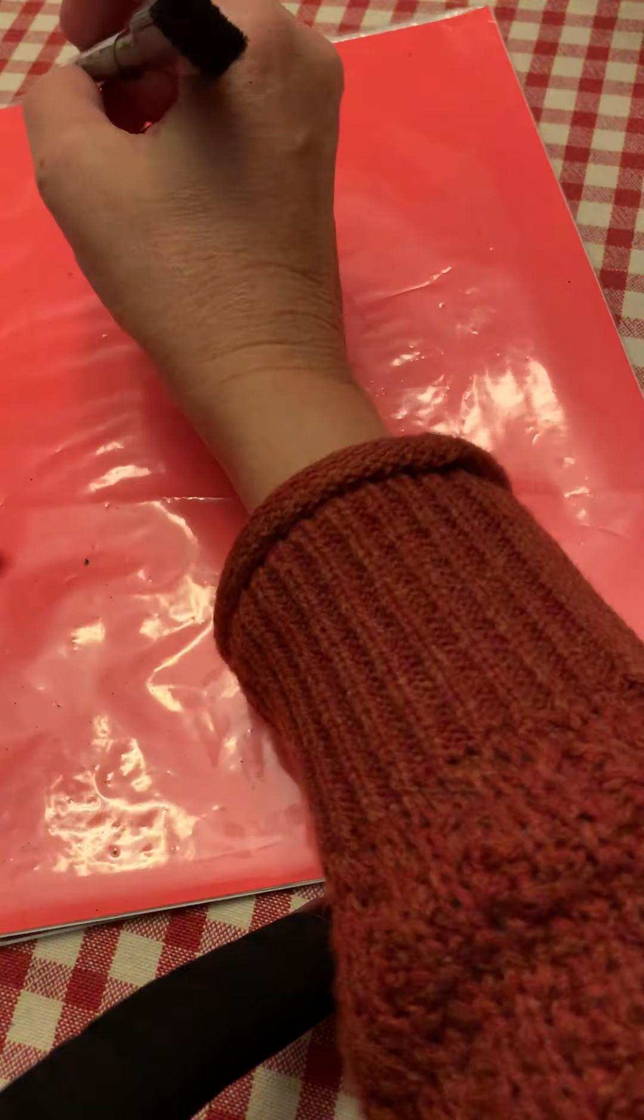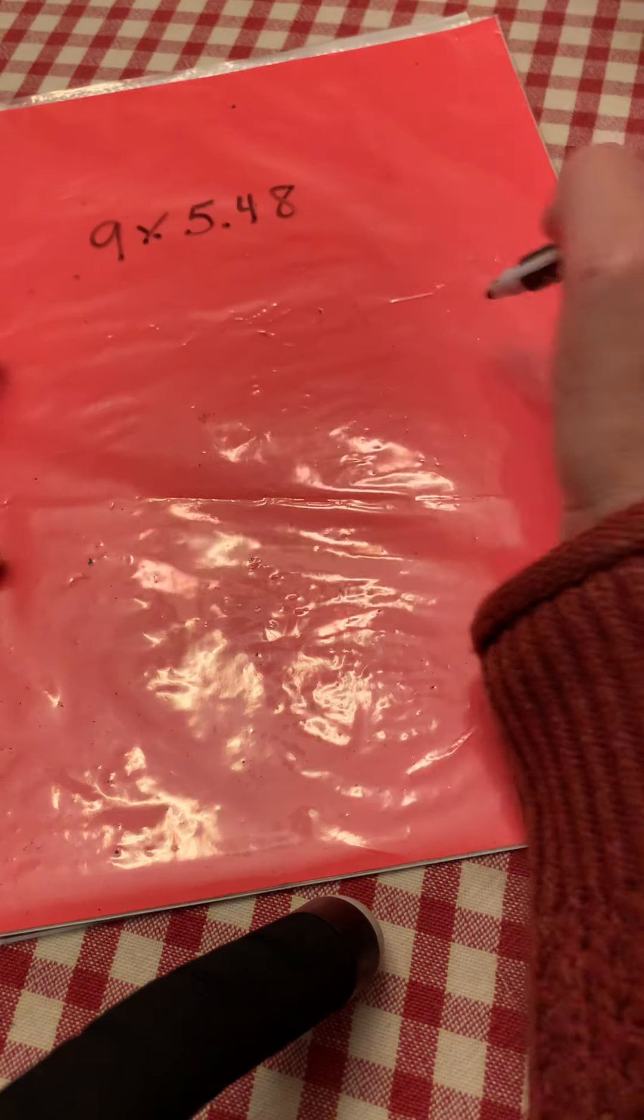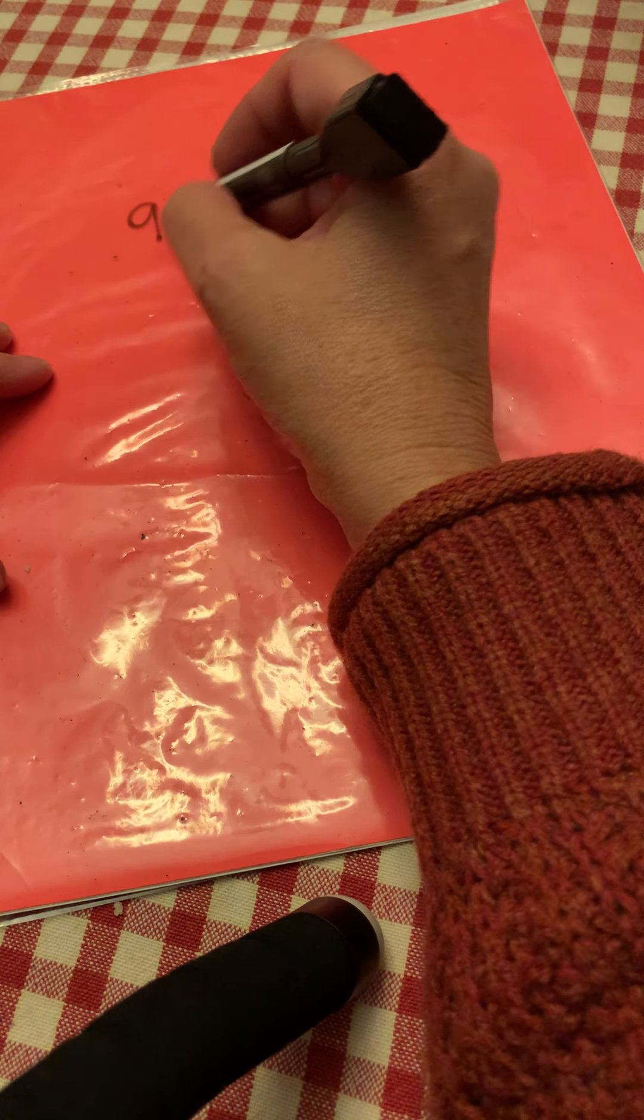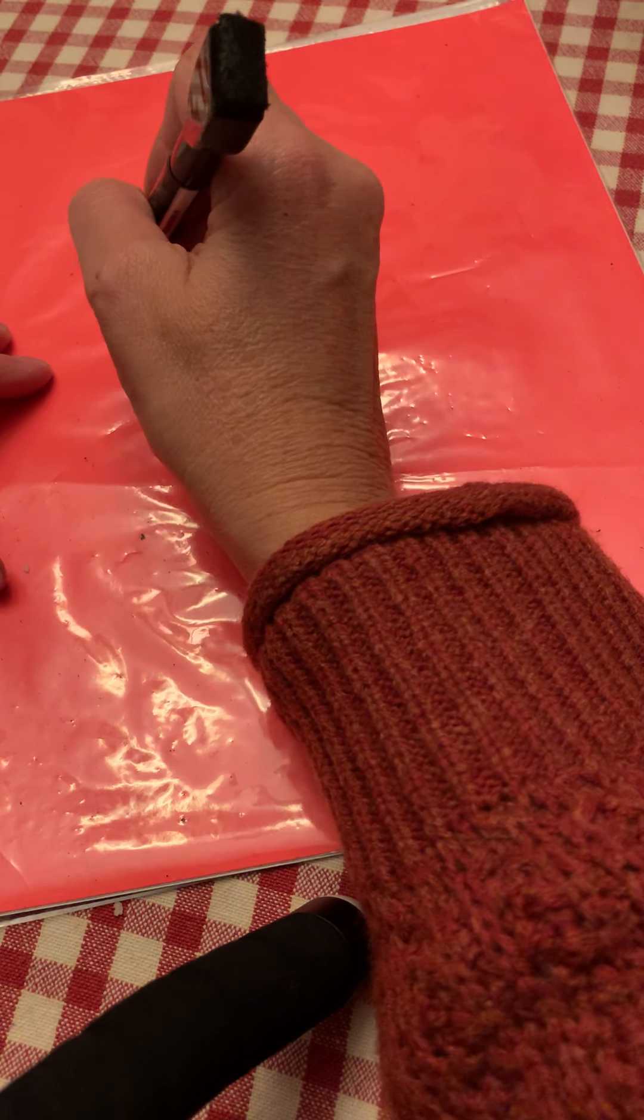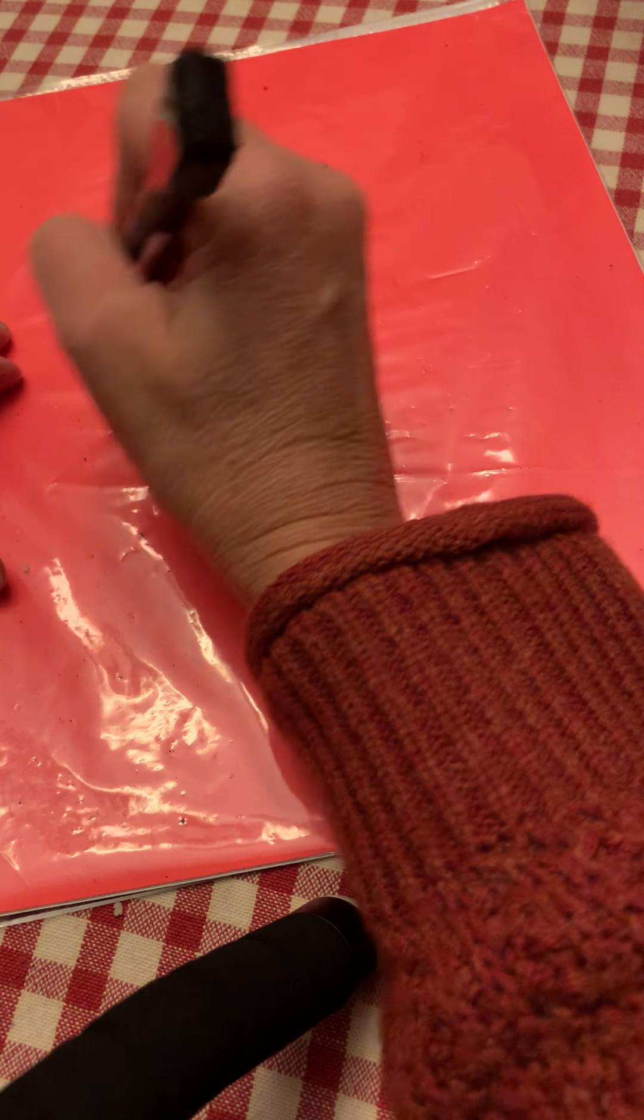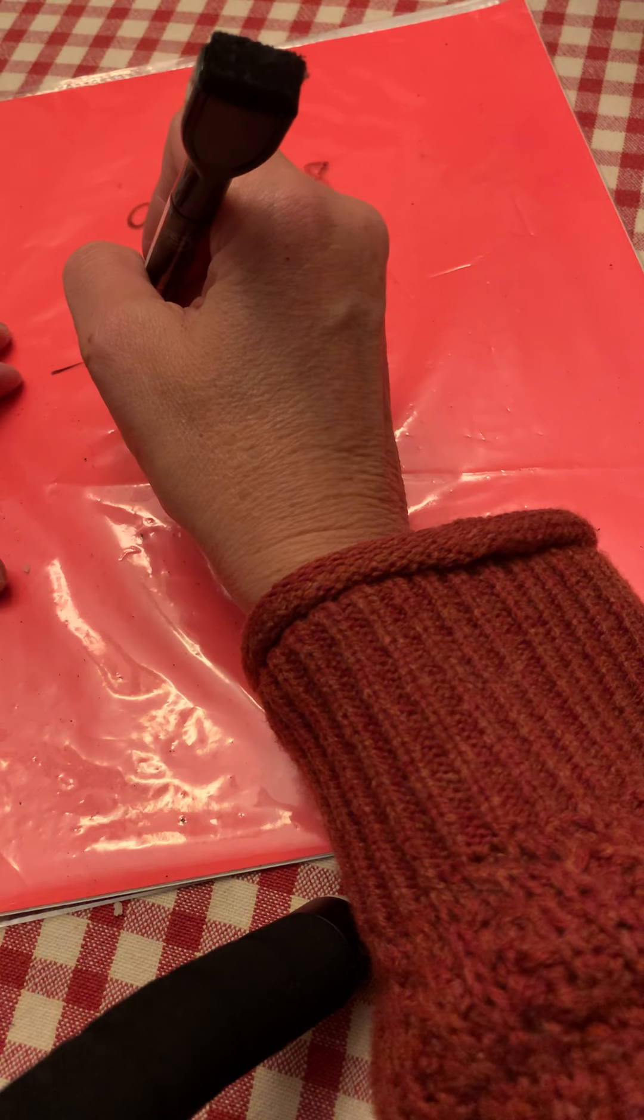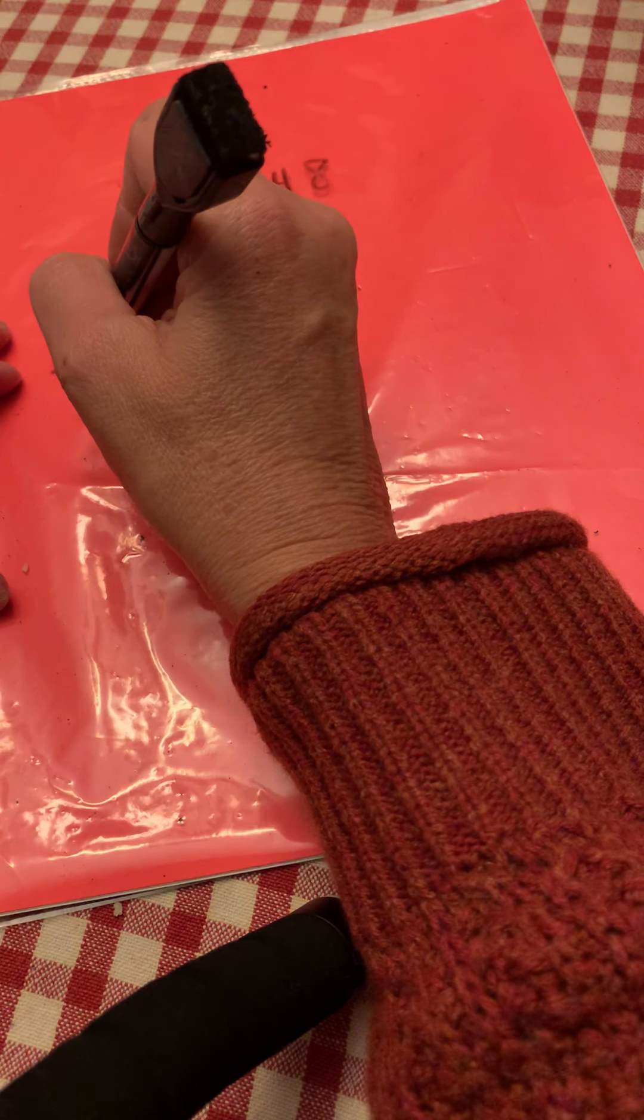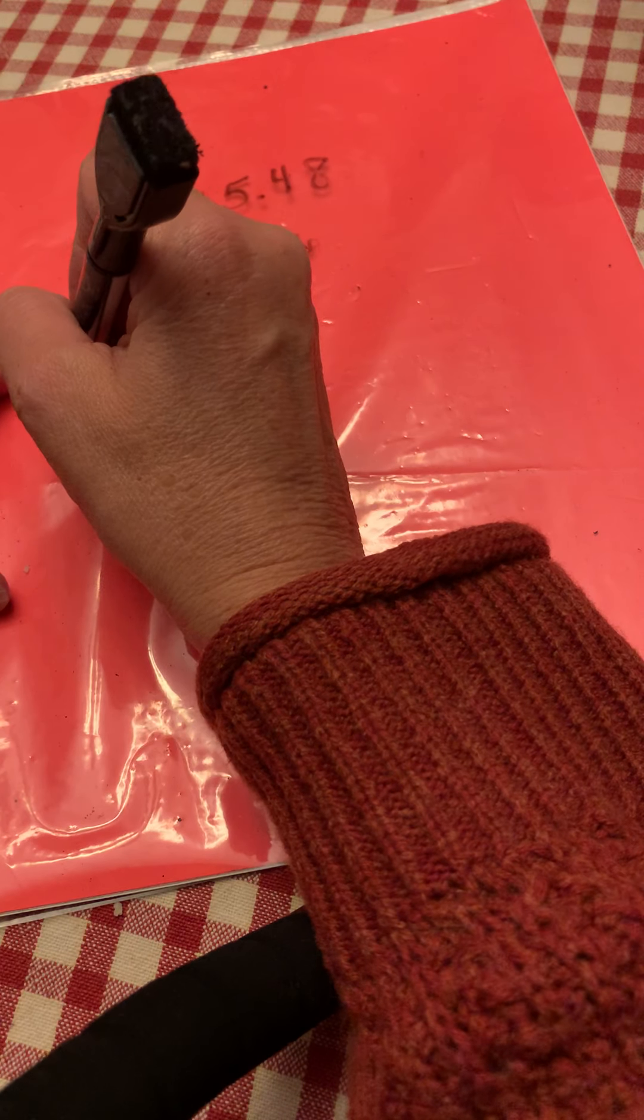All right, one more problem. You had to do nine times 5.48 hundredths. I'm going to do this whole one out again just to make sure you understand. 548 hundredths, my smallest unit is hundredths. 548 hundredths times nine. Nine times eight is 72, nine times four is 36, plus seven is 43. Nine times five is 45, plus four is 49.